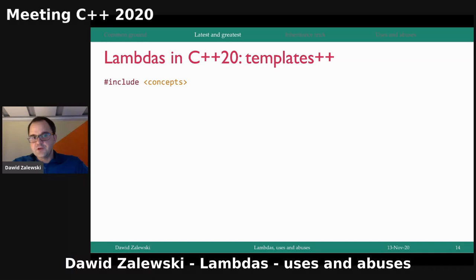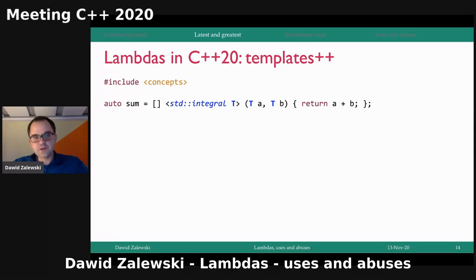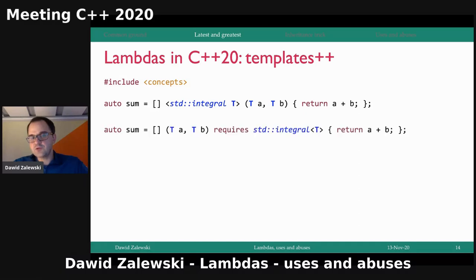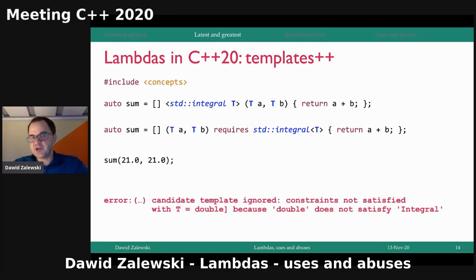The next thing is of course concepts. Not only can you specify template parameters explicitly, you can also constrain them. There are two ways: use the shortcut — instead of typename or class, write your concept name — or use requires after the Lambda parameters. Both will restrict the Lambda to accept only integral types, and both A and B must be of the same type for deduction to work. When you try to call it with something that doesn't satisfy the concept, like a double, the code will not compile.